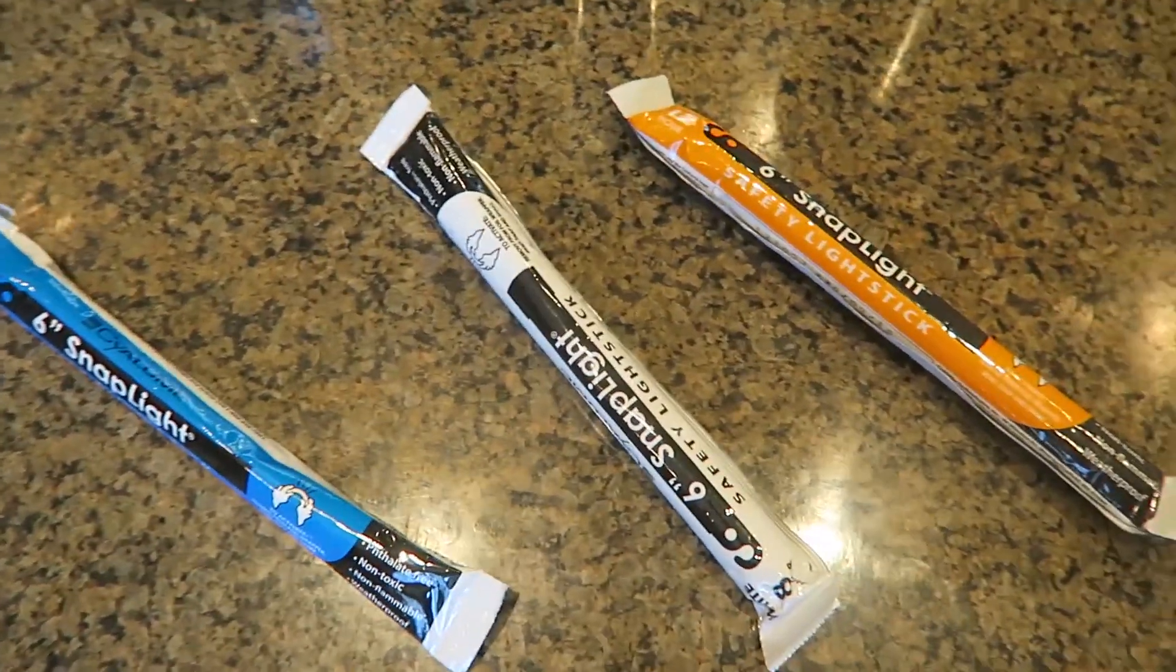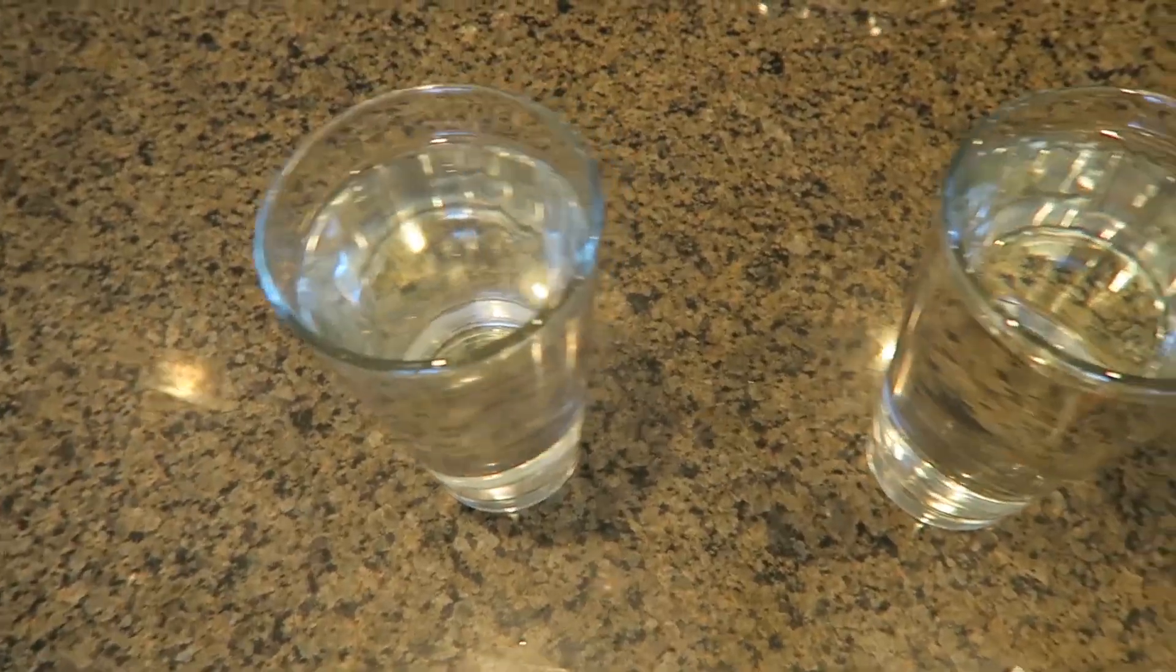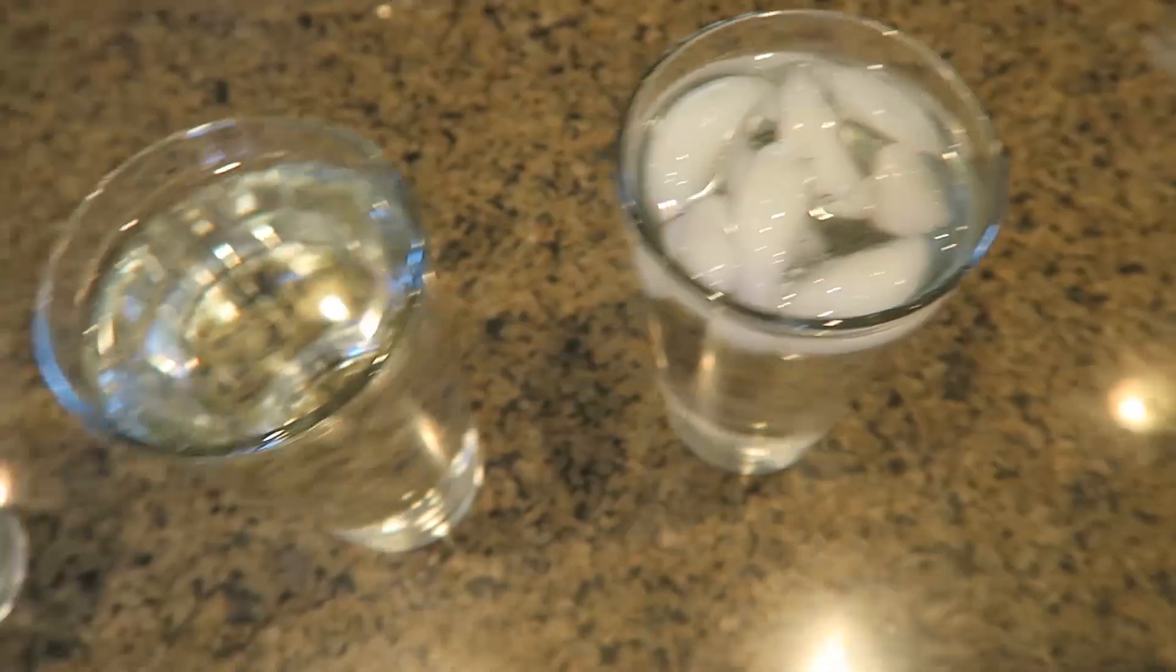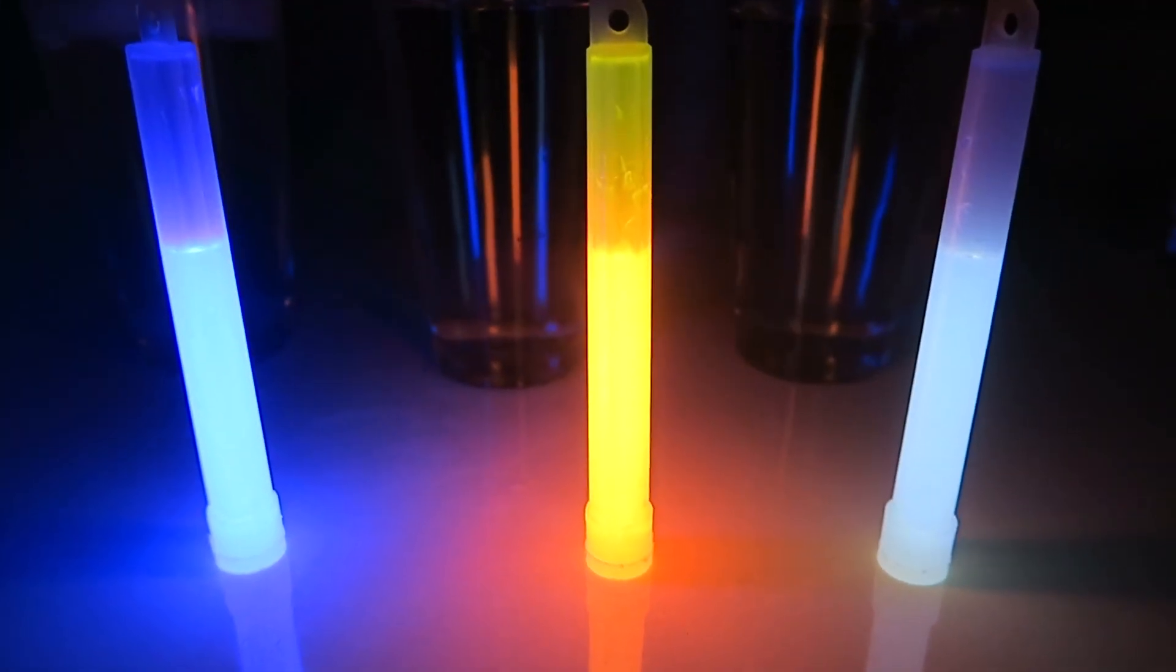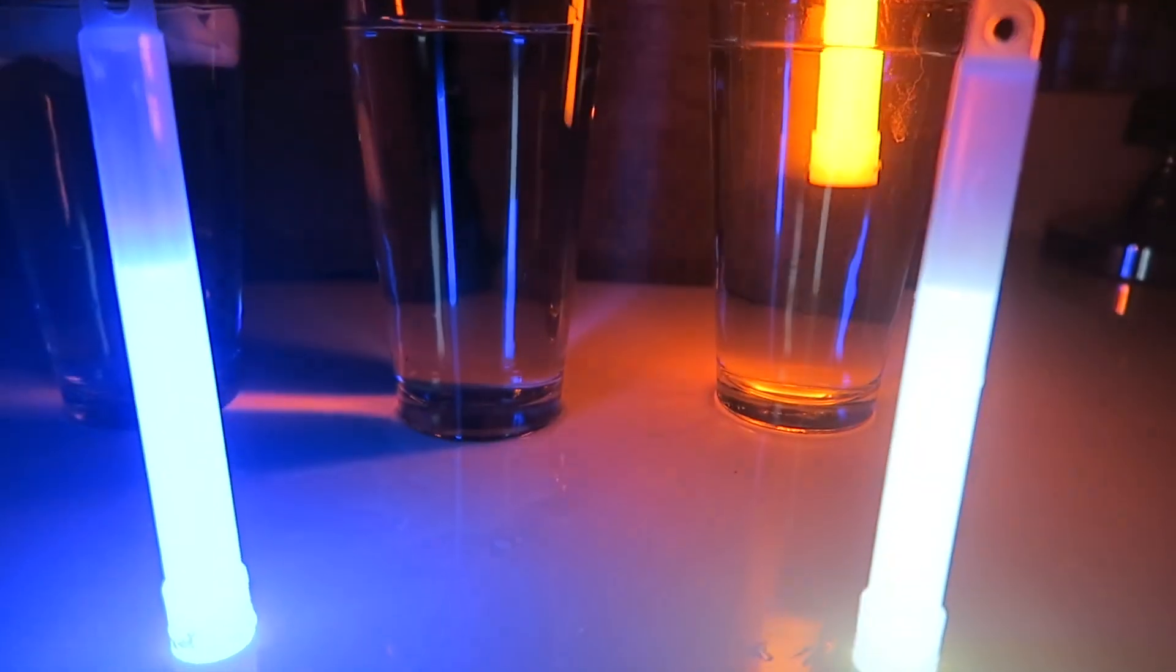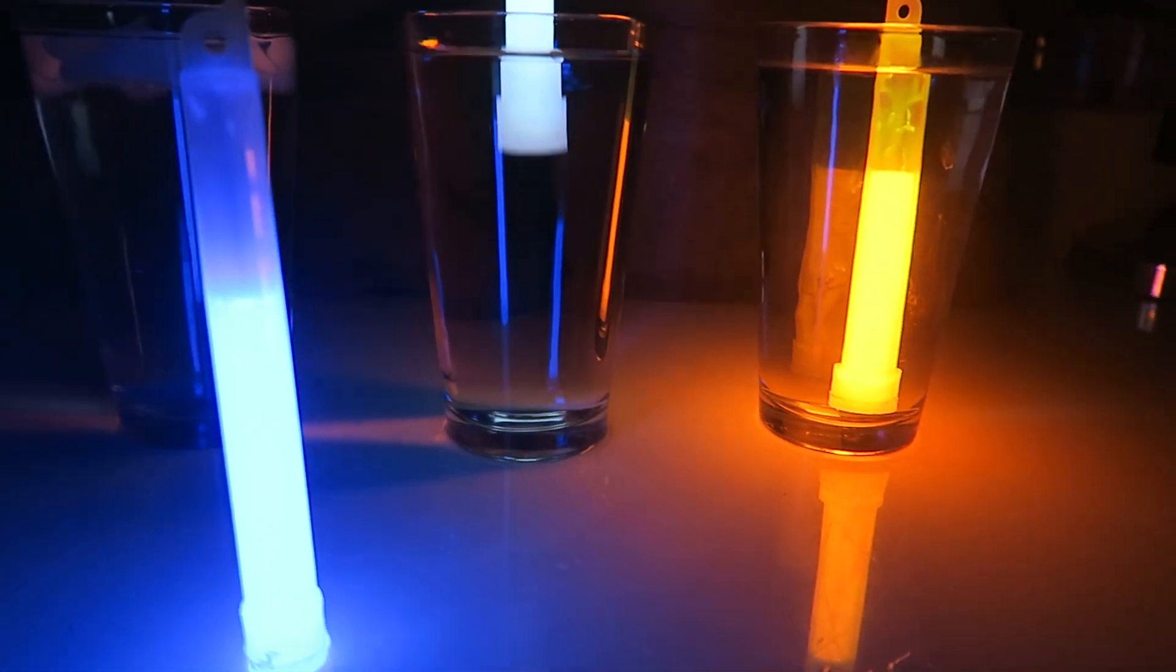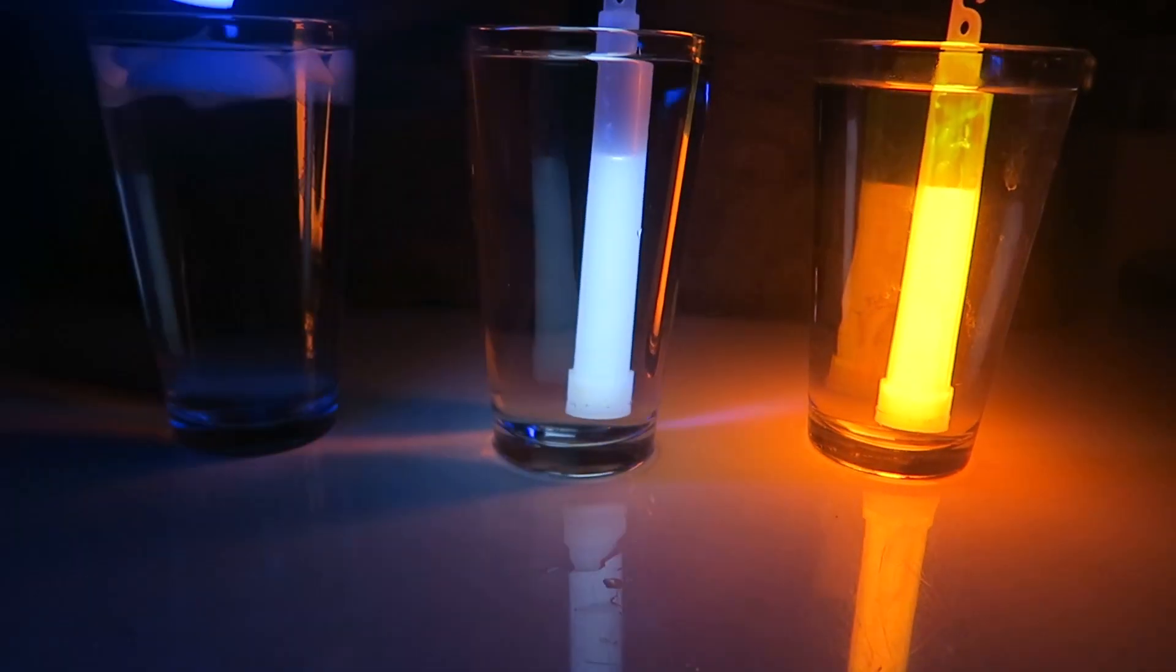Then we're going to activate three different glow sticks and put them in the water with different temperatures and let's see what happens. As you can see right now, they're pretty much the same brightness. So this one is going to go in the hot water, this one in the medium water, and this one